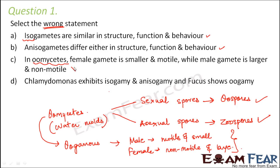So this statement is incorrect — this is the wrong statement. Looking at option four: Chlamydomonas exhibits isogamy and anisogamy, and Fucus shows oogamy. That is correct, because Chlamydomonas has both isogametes and anisogametes. So the correct answer is option three, because that statement is wrong.